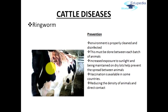So what are the steps to prevent this disease? The environment is the first thing — we have to keep the environment clean and disinfected. This must be done between each batch of animals; whenever every batch comes in it has to be done. Every day the floor is to be cleaned and the environment is to be kept disinfected. Increased exposure to sunlight and being maintained on dry lots help prevent the spread of this disease between animals.